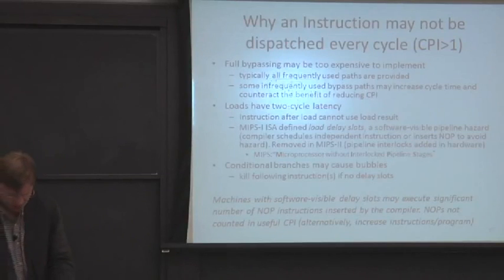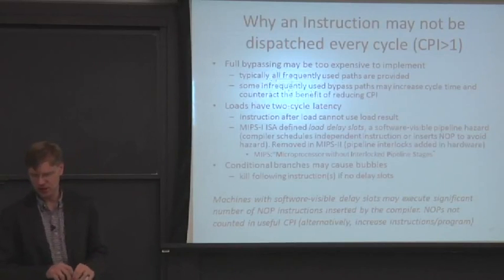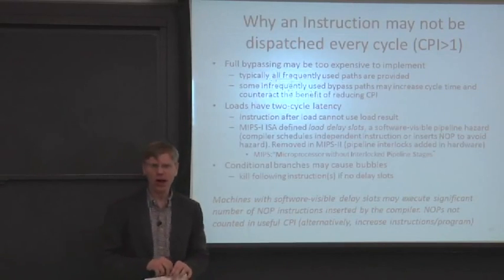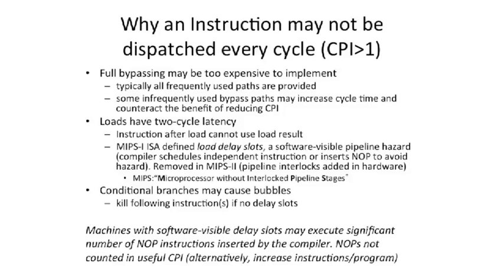We're almost at the end of control hazards. Let's talk about why an instruction may not be dispatched every cycle. When we think about forwarding and full bypassing, this is sometimes really expensive to add. If you're trying to bypass out of every location in your pipe, that may be expensive, so we may still want to stall in certain cases.